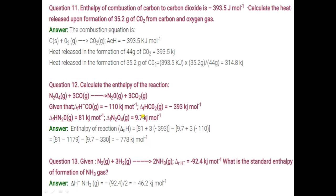So if enthalpies of formation of all reactants and products are given, use this formula: total enthalpy of formation of products minus total enthalpy of formation of reactants. If number of moles are more than 1, multiply by the number of moles.